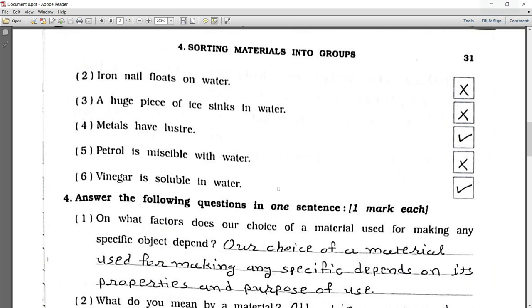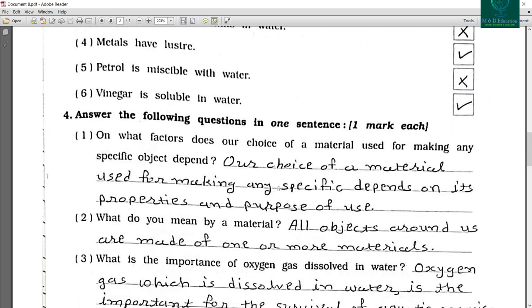Metals have luster. Right. Petrol is miscible with water. It's wrong. Vinegar is soluble in water. So it's right. Now answer the following questions.